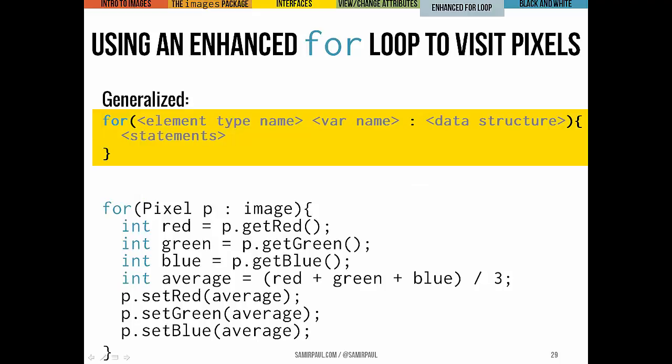To generalize: an enhanced for loop looks like 'for (ElementType name : dataStructure) { do things }'. The element type and name describe what we call each element on each iteration; the data structure is what we're iterating through — here an APImage called image. On each pass, the loop variable picks up the value of the next available element. You don't need to make any assumptions about the order of visiting elements — you just trust that it works. Enhanced for loops are often easier to read and write than a regular for loop using numerical positions.